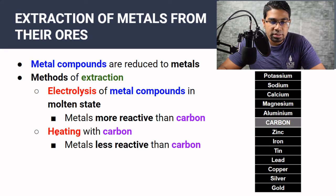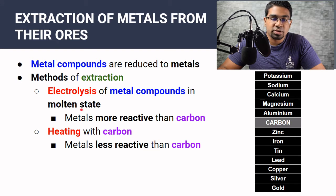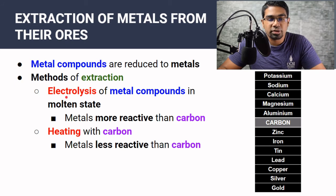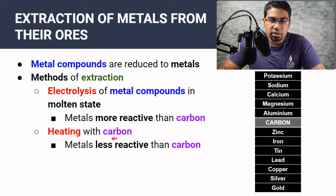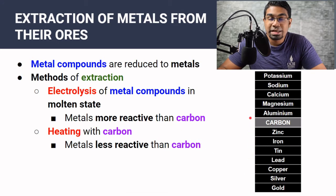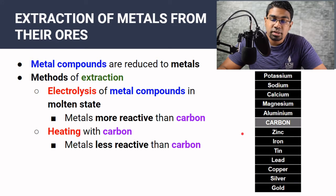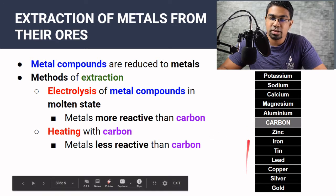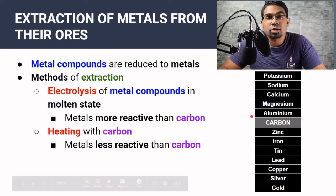We cannot use the second method — heating with carbon — for those metals. Heating with carbon is preferable because carbon is abundant and cheaper than electrolysis. Electrolysis is very expensive because the electricity required is costly. Heating with carbon applies to metals that are less reactive than carbon, meaning metals lower than carbon in the reactivity series — downwards from zinc. Carbon is more reactive than these metals and therefore can displace them from their metal compounds.